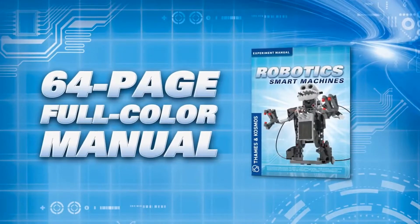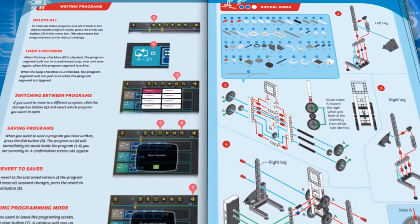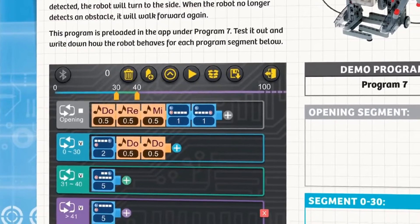A 64-page full-color manual provides step-by-step illustrated building instructions and example programs for eight robots.